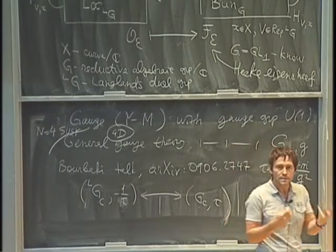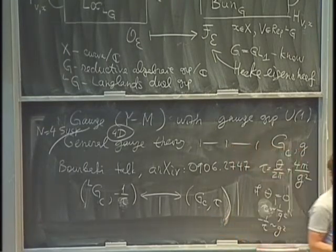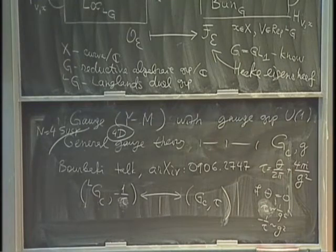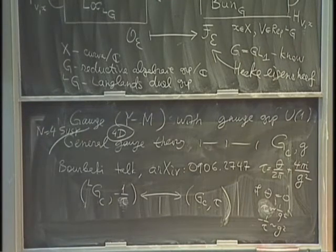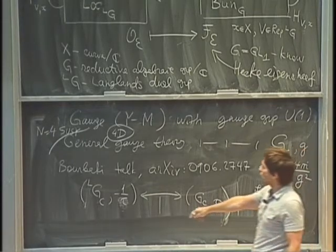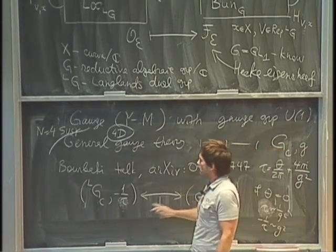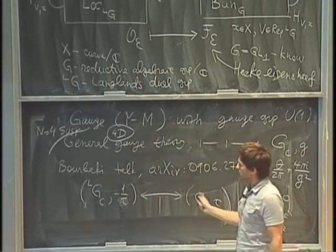Finally, about 10 years ago, the ideas appeared, starting with the work of Kapustin and Witten, which I'm going to now describe. There are two ways to look at this duality. One way is to say there are two different theories: one gauge theory with gauge group G_c and parameter τ, and another with the dual group and parameter −1/τ, which are equivalent. But I think that's not the best way to look at it.